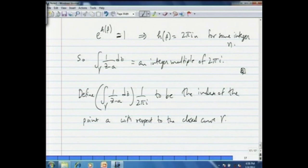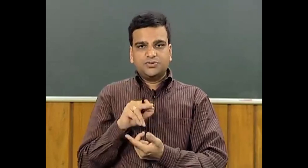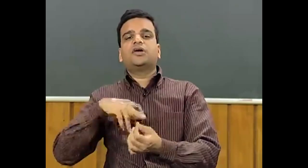We define the index of the point a with respect to the closed curve gamma to be this integral divided by 2*pi*i. That integer n is called the index, and the intuition is that it counts how many times gamma goes around a, keeping track of orientation. If the index is -2, the curve goes around point a twice in the clockwise direction.